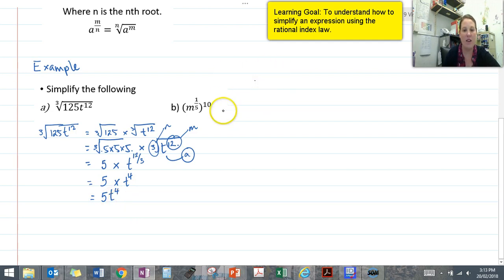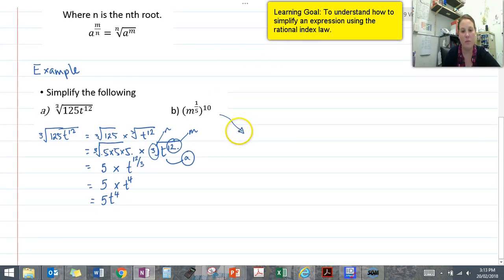Now for our second example, we have m to the power of 1 over 5. So let's expand our brackets first. We have m to the power of 1 over 5 to the power of 10.